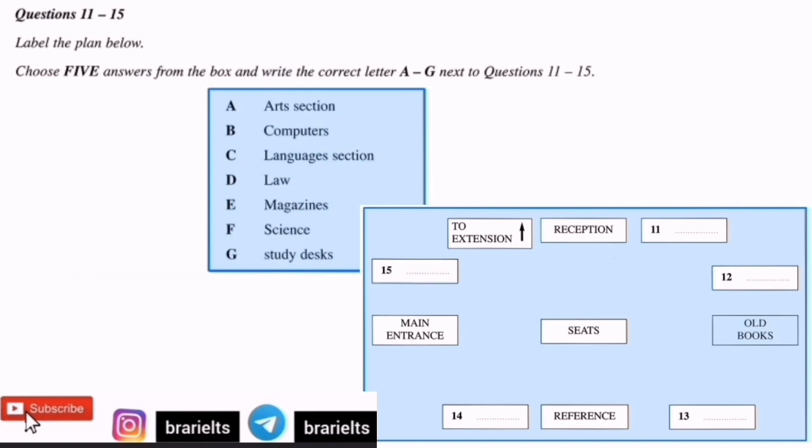Then, at the back of the library, you can see the section for old books. Next to that is where the books proper start. That used to be the science section, but now on those shelves, you'll find the art section. We had a big reorganization in the summer, which I think has made it clearer. The numbering is standard, so you should be able to find what you want quite easily.